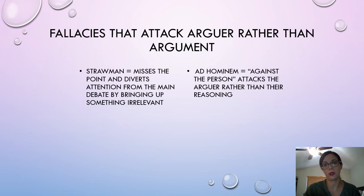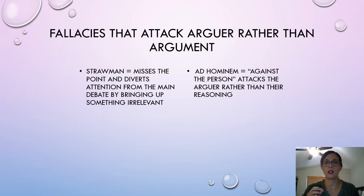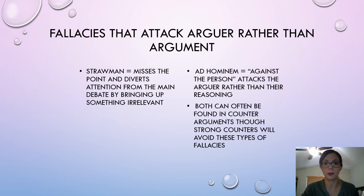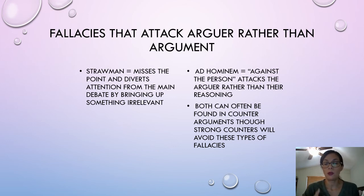Ad hominem is Latin for 'against the person.' This is a direct attack on the opponent, usually on a moral basis — attacking their character, saying they had an affair or are corrupt and cannot be trusted. Rather than diverting attention away from the topic, you directly attack the person. Both straw man and ad hominem are terrible flaws because you're not dealing with the substance of the argument. Strong counters use logical premises, well-representative examples, or statistics — not diversion or personal attacks.